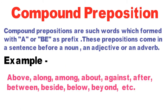Let's see which words are examples of compound prepositions: above, along, among, about, against, after, between, beside, below, beyond, etc. Yeh sabhi words compound prepositions ke examples hain. Halanki in words ka formation alag hota hai, lekin inke functions waise hi hote hain jaise anya sabhi prepositions ke.